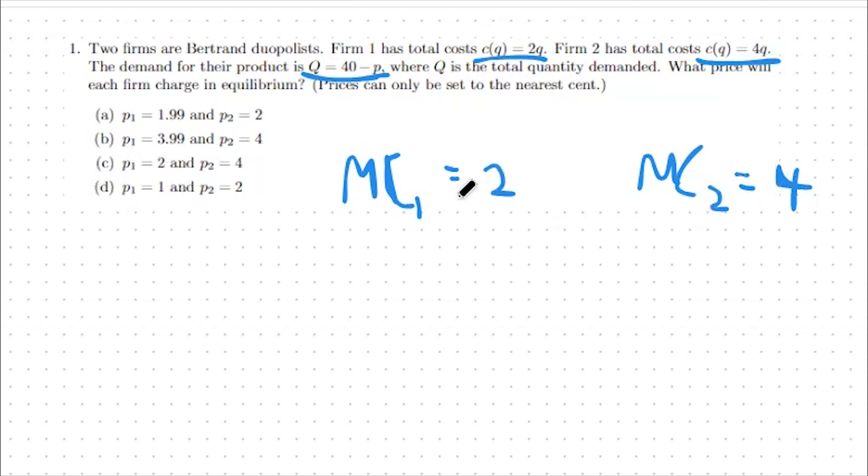Firm 1 has a lower marginal cost than firm 2 and therefore can price at any price point between two and four dollars and still take over the entire market. For instance, if firm 1 were to charge three dollars, firm 2 would not be able to sell a single unit because it costs them four dollars to produce each unit.